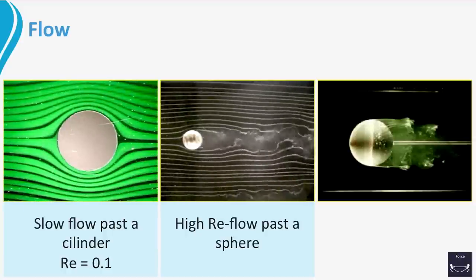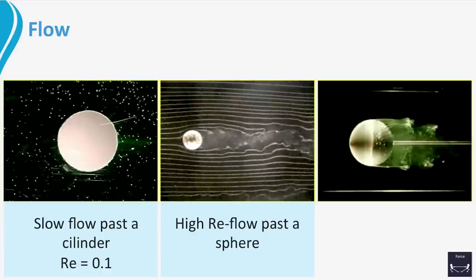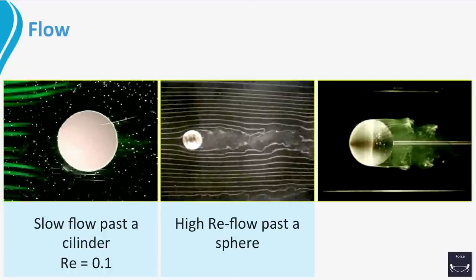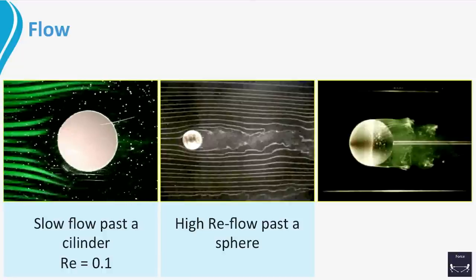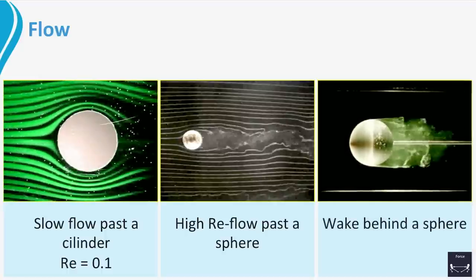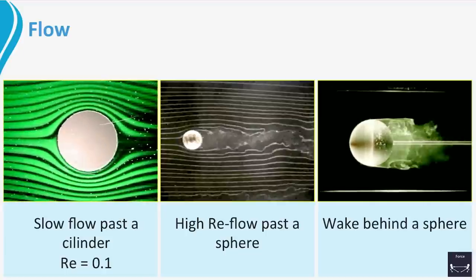This is clearly seen in the movie. It is the same as can be seen behind pillars of bridges where all kind of stuff gets trapped. It is a region of low pressure. In the third movie we zoom in on the wake. It is again clear that the air flow around the sphere cannot follow the shape of the sphere on the back side.